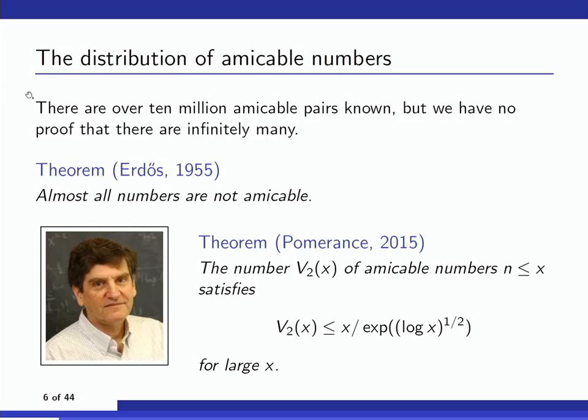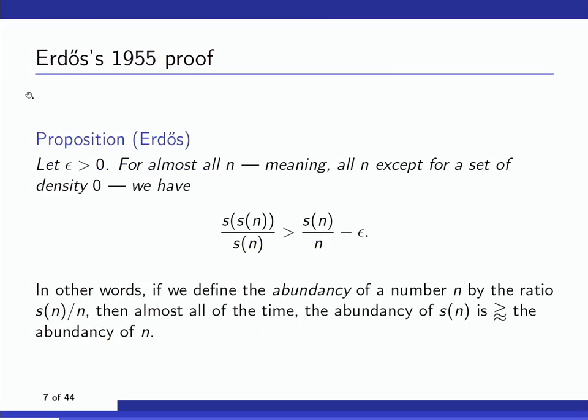I want to say a bit about how Erdős proved this theorem because it connects with the new work I want to discuss later. There are two legs to this proof. The first is the following proposition: let epsilon be greater than zero; then for almost all n, s(s(n))/s(n) is bigger than s(n)/n minus epsilon.